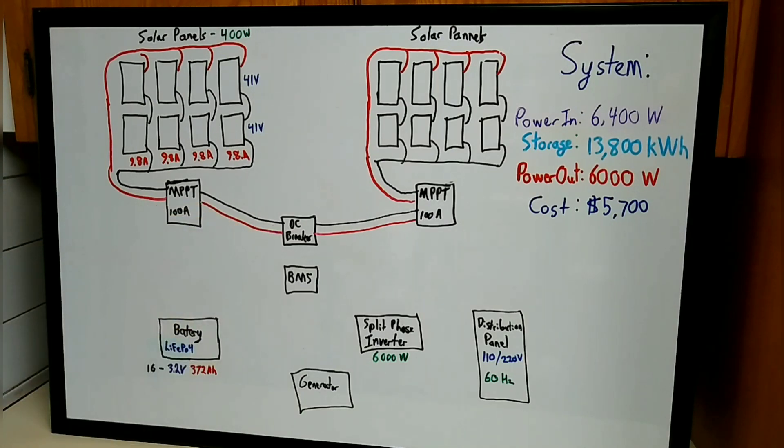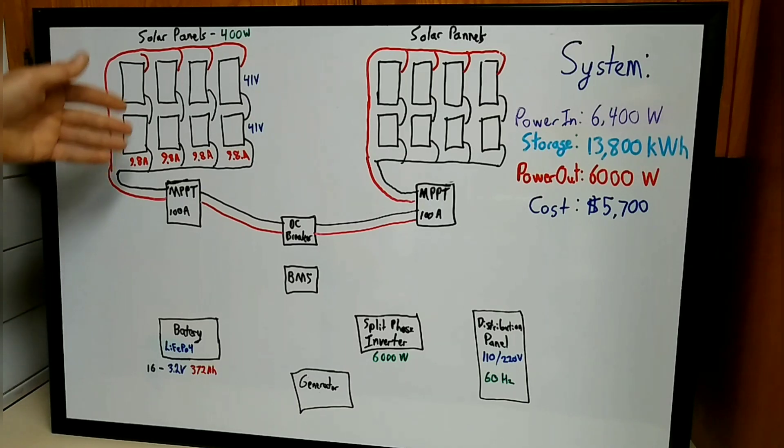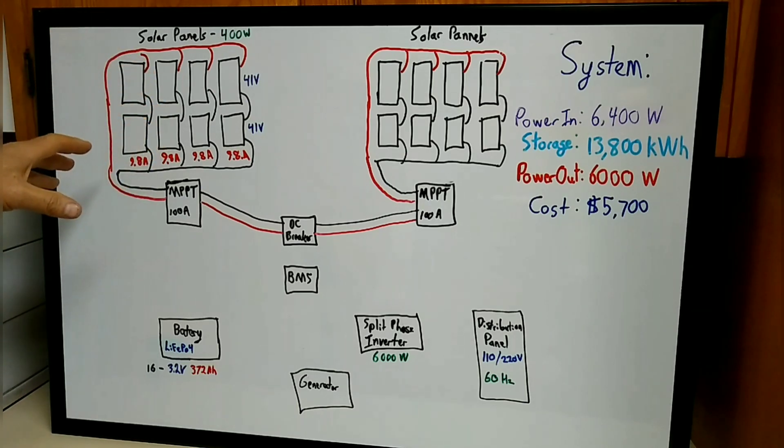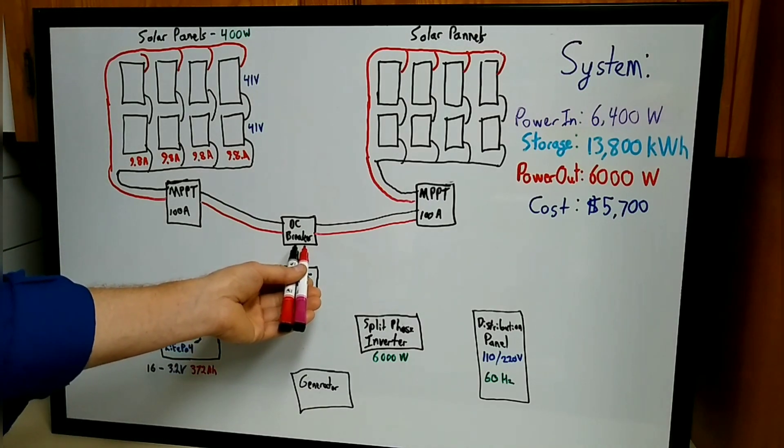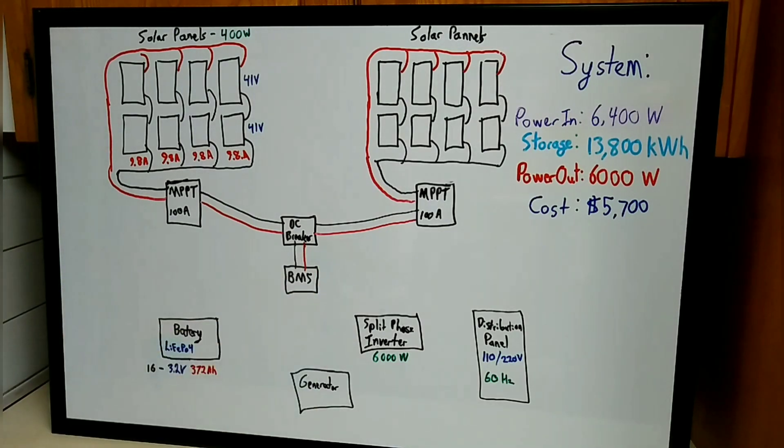We're bringing that into a DC breaker box so that if there's an overload in one of the systems or a short in one of the circuits, that breaker will trip and cut the power. We can also just shut it down as we like. We're going to come out of the breaker into the BMS, which stands for battery management system.